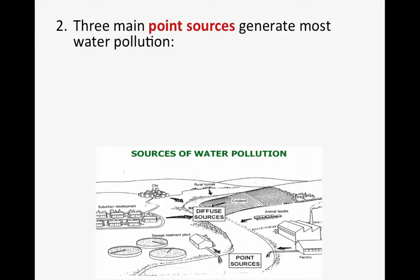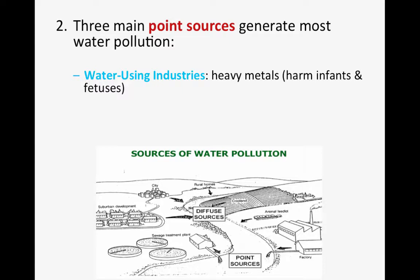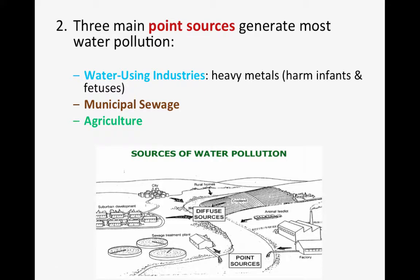Where does water pollution come from? There are point sources and non-point sources. Point sources have a more direct impact — a direct line between pollutant and waterway. There are three main point sources: industries that use water, such as heavy metal processing whose byproducts end up in the water and damage infants and fetuses; municipal sewage; and agriculture, such as irrigation. All of these have a direct line to our waterways — the pollution goes directly into them.